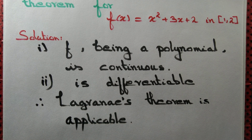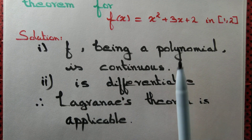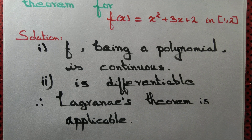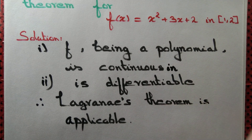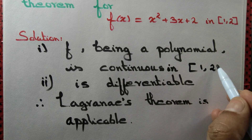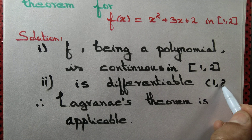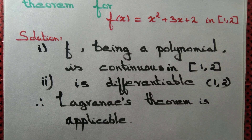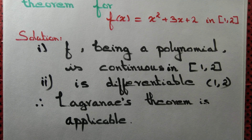To apply Lagrange's theorem, we need the function to be continuous and differentiable. We have established both. It is continuous throughout ℝ, and in particular it is continuous on the closed interval [1, 2], and differentiable on the open interval (1, 2). Now, since Lagrange's theorem is applicable, let us apply it.